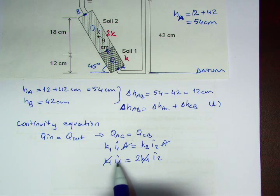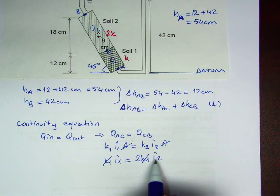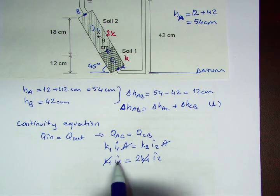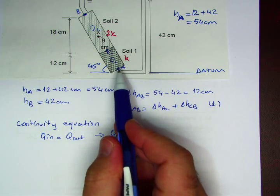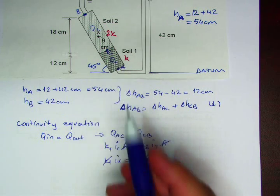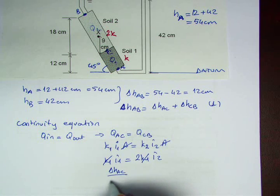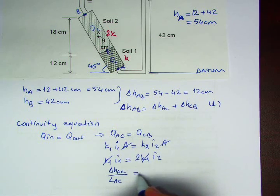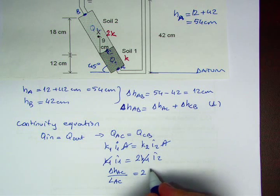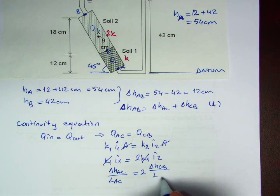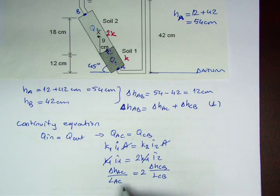I will write i1 in terms of Delta HAC divided by the length AC. i1 is Delta HAC divided by LAC, that's equal to 2 times Delta HCB divided by LCB.